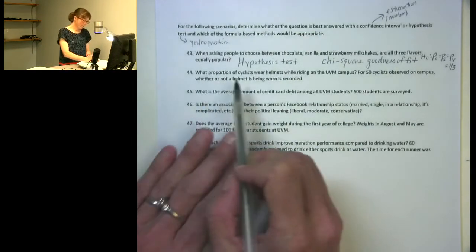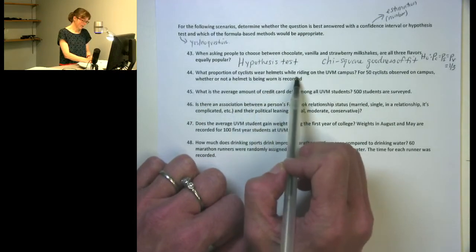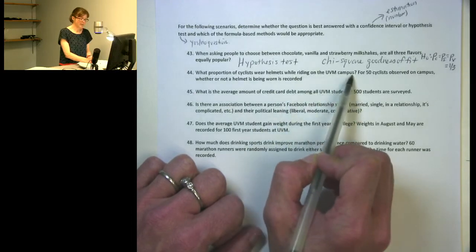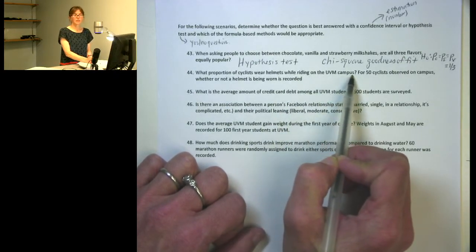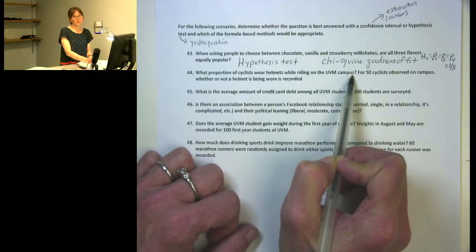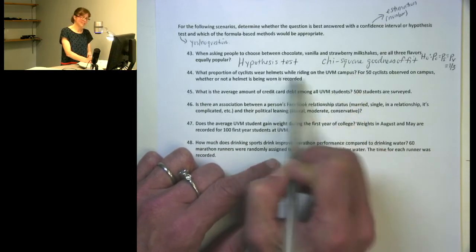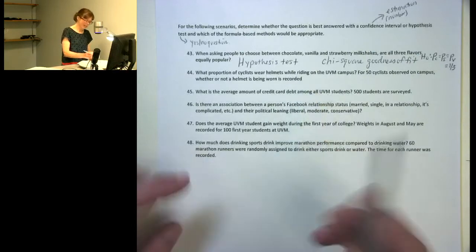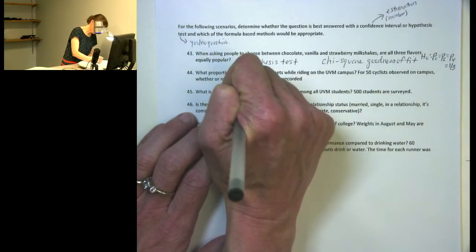Question 44, we want to know, what proportion of cyclists wear helmets while riding on the UVM campus? So this is not a yes or no question. If I asked you, what proportion, and you said yes, I would not be satisfied, right? So this is an estimation type of question. So I need to use a confidence interval for this one.